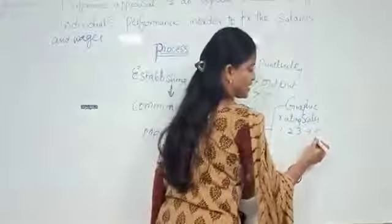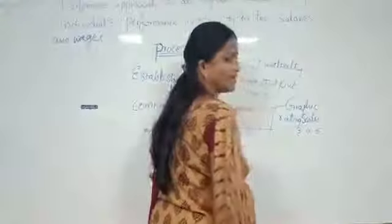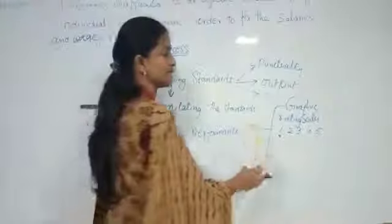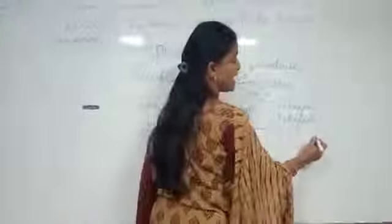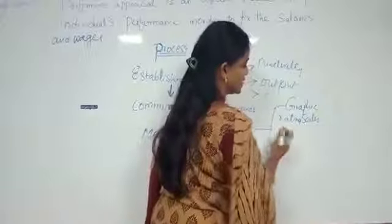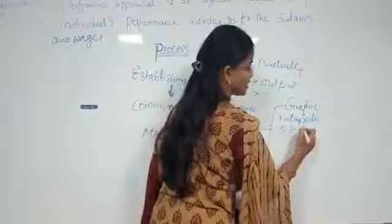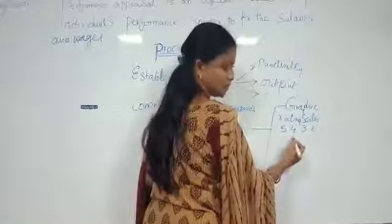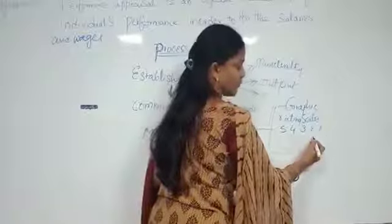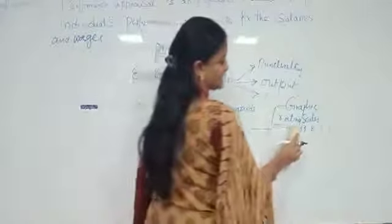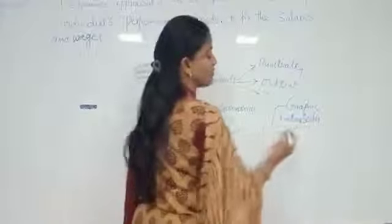5 is the highest rating and 1 is the lowest. The ratings are: 5 = excellent, 4 = good, 3 = average, 2 = below average, and 1 = poor. So ratings are given to employees using this graphic rating scales method, and performance evaluation is done accordingly.